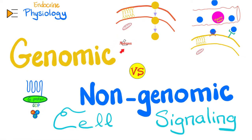Hey guys, it's Medicosis Perfectionitis, where medicine makes perfect sense. Let's continue our famous physiology playlist. In previous videos, we talked about gastrointestinal physiology — from top to bottom, from proximal to distal, from oral to anal. Today, we'll start a new series: endocrine physiology. And we'll start with the difference between genomic and non-genomic actions. The idea is pretty simple.